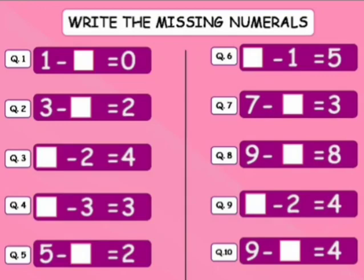Write the missing numerals. 1 minus blank equals to 0. 3 minus blank equals to 2. Blank minus 2 equals to 4. Blank minus 3 equals to 3. 5 minus blank equals to 2. Blank minus 1 equals to 5. 7 minus blank equals to 3. 9 minus blank equals to 8. Blank minus 2 equals to 4. 9 minus blank equals to 4.